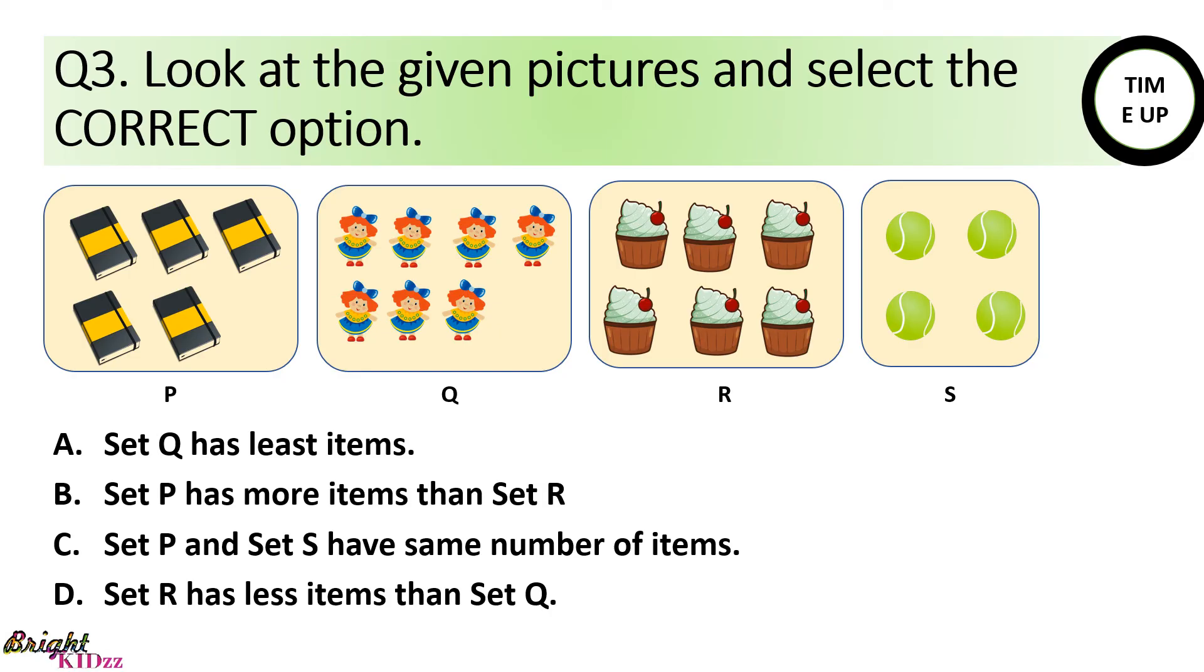So, here first set Q has least items. This is wrong because it has most items. Then set P has more items than set R. Here there are 5 and there are 6. So, this is also wrong. Set P and S have same items. This is again wrong because set P has 5 and set S has 4. Set R has less items than set Q. So, this is correct because set Q has 7 and set R has 6 items.